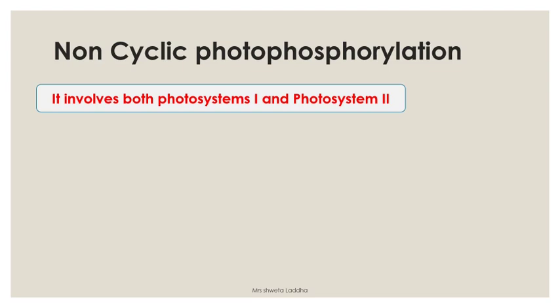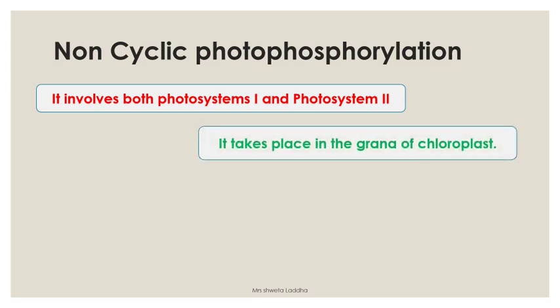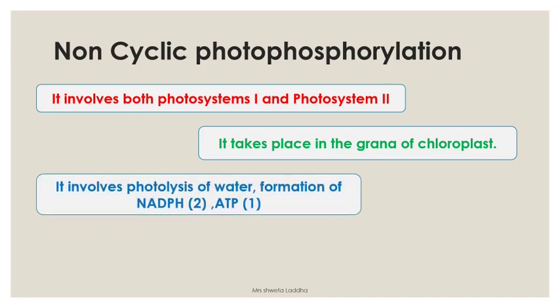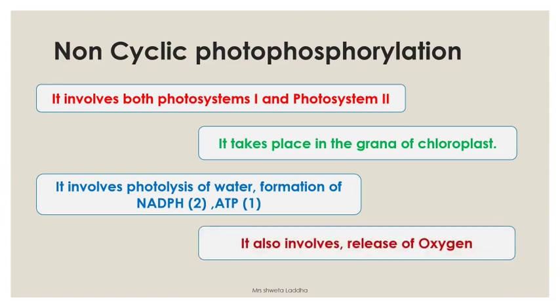Non-cyclic photophosphorylation involves both photosystems — photosystem 1 and photosystem 2 — both are participating. It also takes place on the grana, on the wall of the thylakoid membrane, in the grana of the chloroplast. It involves three important processes: photolysis of water occurs, water splits in presence of solar energy to give out oxygen, formation of two molecules of NADPH and one molecule of ATP is formed, and oxygen is released when splitting of water takes place in presence of sunlight.